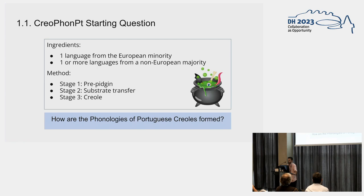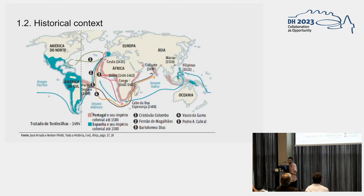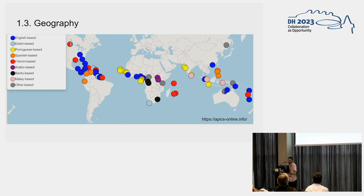The driving question of the database is: how are the phonologies of Portuguese creoles formed? Creoles were formed during European colonial expansion. Here is the map of the Portuguese versus Spanish colonial territories, and then we had the French, English, and Dutch expansion. The locations of the creoles correspond to the former locations of the colonial powers.